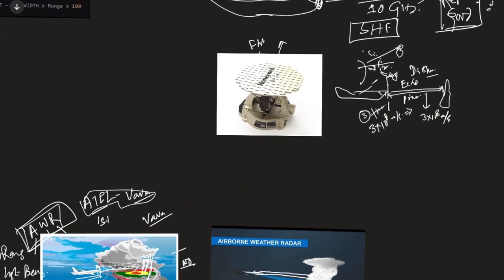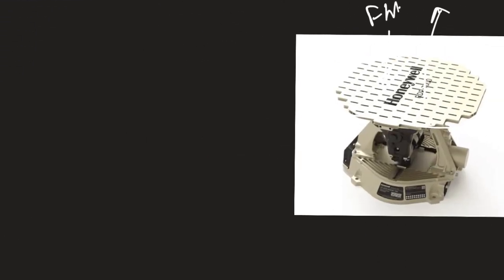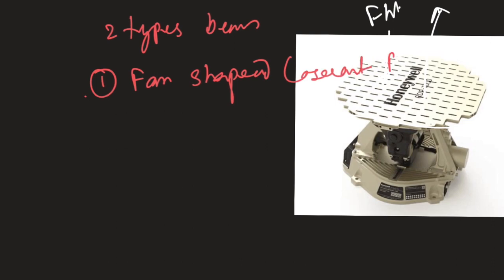How does the airborne weather radar work? The radar antenna in the nose of the aircraft produces two types of beams. One is fan-shaped cosecant beams, and the other is the long-range pencil beam.